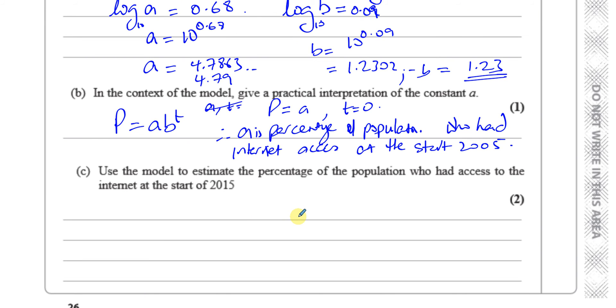Then it says, use the model to estimate the percentage of the population who had access to the internet at the start of 2015. So we know that P equals 4.79 times 1.23 to the power of T. At the start of 2015, time is going to be from 2005 to 2015, which is 10 years. So I know that P is going to be 4.79 times 1.23 to the power of 10. That would be the percentage of the population who has access to the internet at the start of that year, 2015.